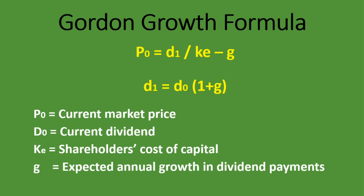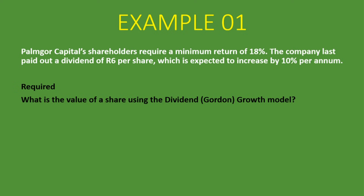Let's look at an example to help you understand this thoroughly. Pumgo Capital's shareholders require a minimum return of 18% — that is the cost of equity. The company last paid out a dividend of six rand per share, which is expected to increase by 10% per annum. We are required to calculate the value of a share using the dividend growth model or Gordon growth model. P0 is what we are asked to calculate.